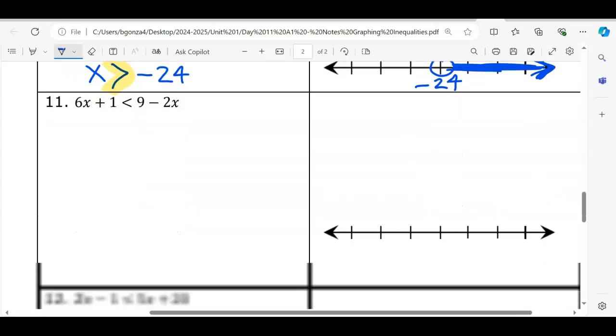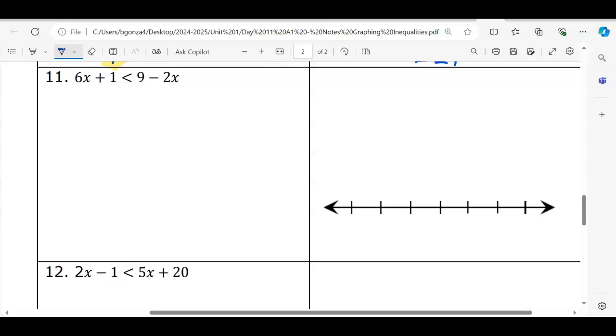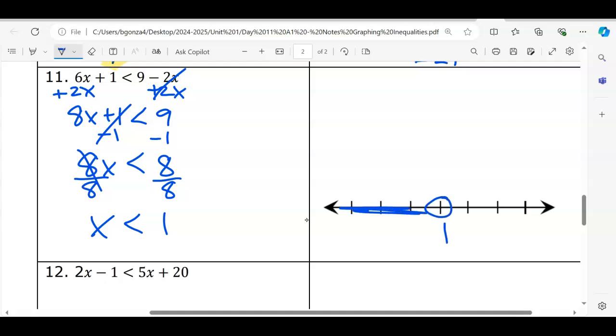All right. And number 11. X is on both sides. Let's get rid of the smaller X, which is minus 2X. The opposite is plus 2X. Plus 2X. 8X plus 1 is less than 9. Doesn't change the inequality. Minus 1 to get rid of the loaner. Divide to get rid of the coefficient. Since we divided by a positive, it's going to stay less than 8 divided by 8 is 1. So, again, open circle, shaded to the left for our less than sign at 1.